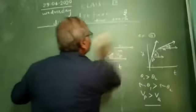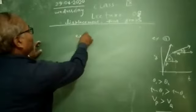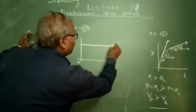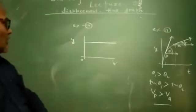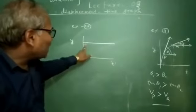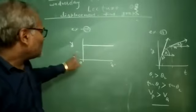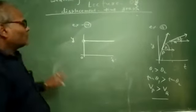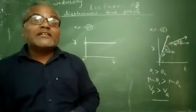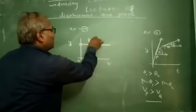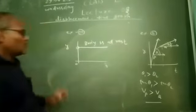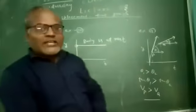Now, in the third graph, we take the time axis and position axis with a line parallel to the time axis. Time goes on increasing — time can never be negative — but the position of the body remains the same. So in a displacement-time graph, a line parallel to the time axis represents the body is at rest position.